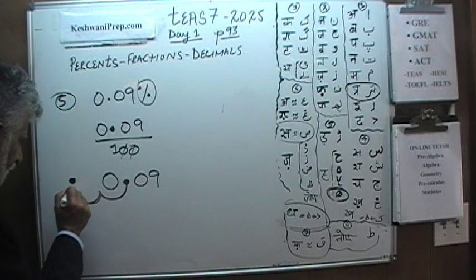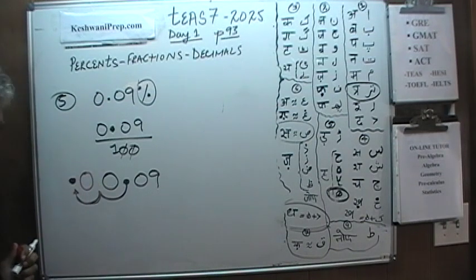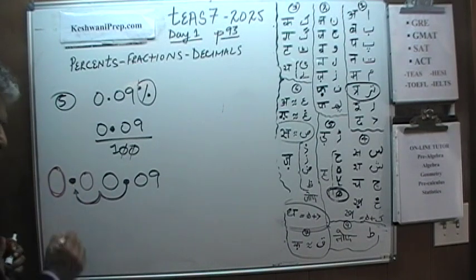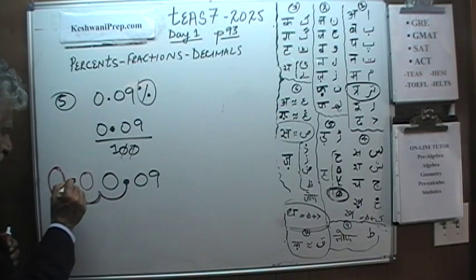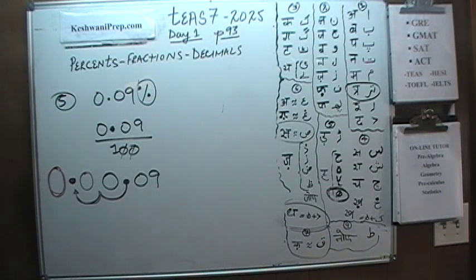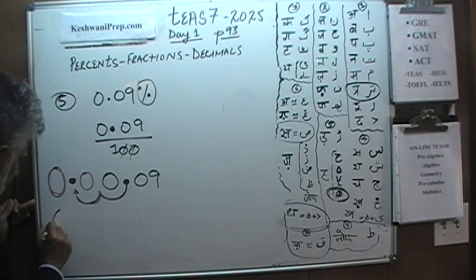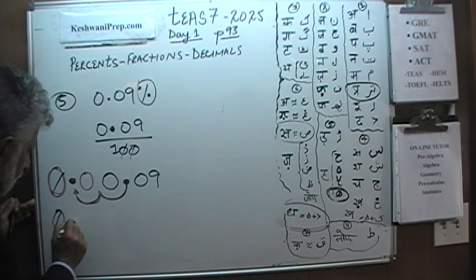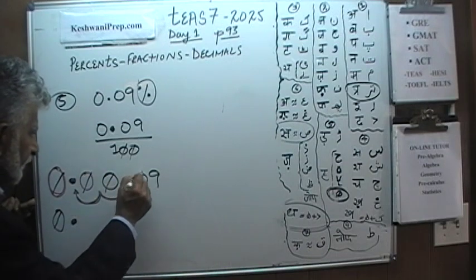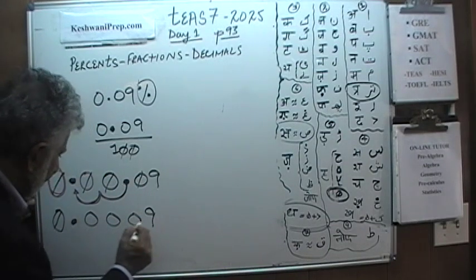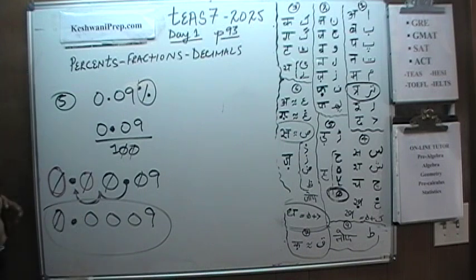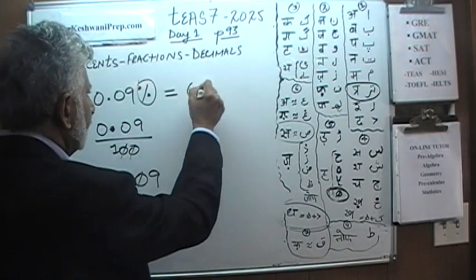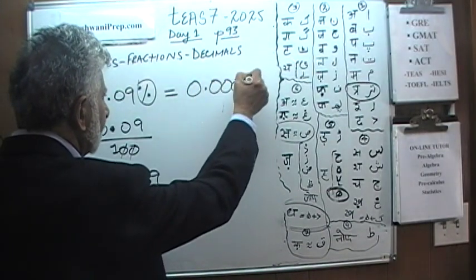After moving the decimal two places, we need to insert a zero, making it 0.0009. So 0.09 percent expressed as a decimal is 0.0009.